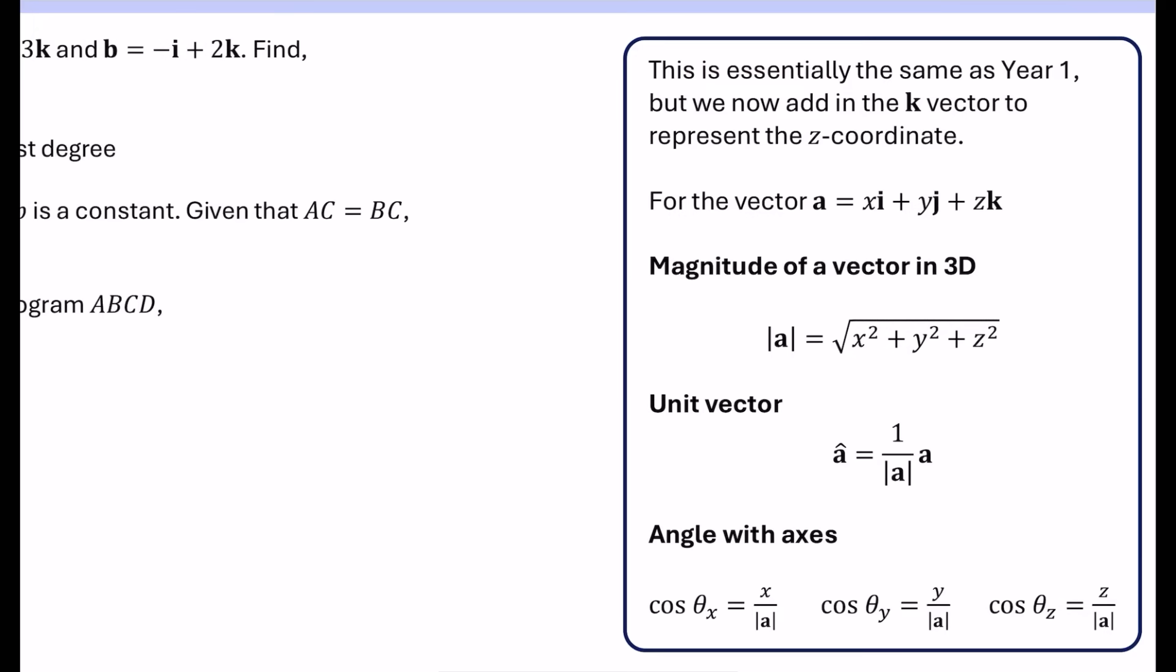And so for this particular vector a, which of course, when I write it, I would do it underlined, but when it's typed, I do it in bold. The magnitude of this vector in three dimensions, it's basically what you'd expect it to be. It's like Pythagoras, but with just the x, the y, and the z all being squared. And as you know, those signs that we have either side of the a, that's sort of like the modulus or the magnitude of a that we have there.